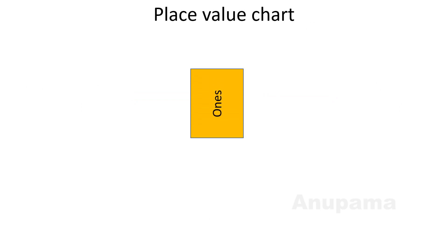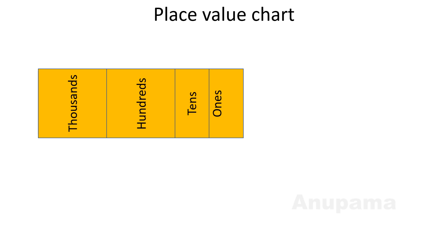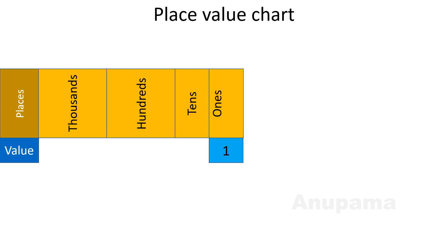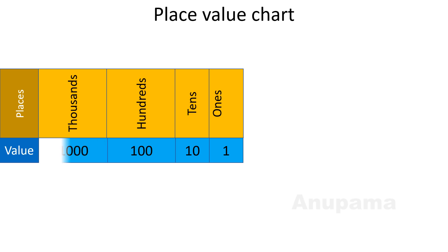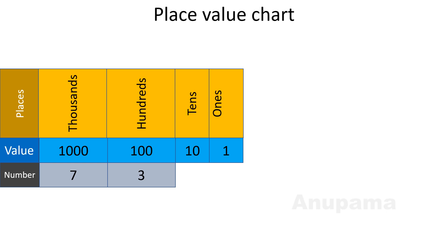Let us study the place value chart. We have already learned that place values are: ones, tens, hundreds, thousands, and so on. These are called places, and their values are: ones place has value 1, tens place has value 10, hundreds place has value 100, and thousands place has value 1,000. Here is a number: 7,342. I have written this number in the place value chart.